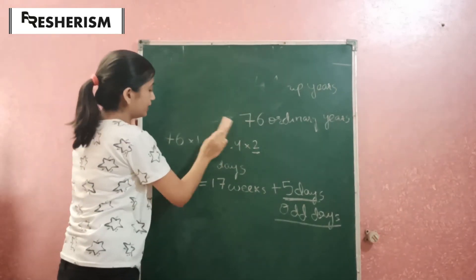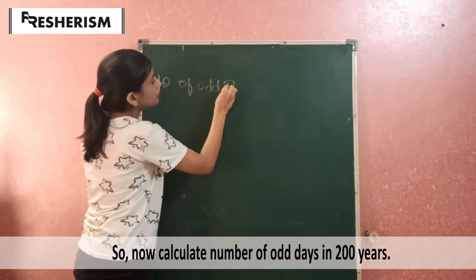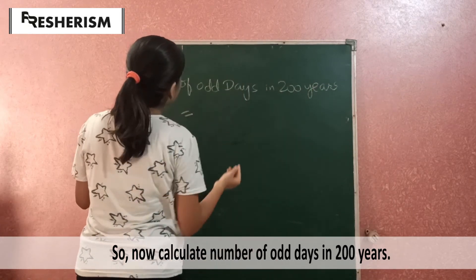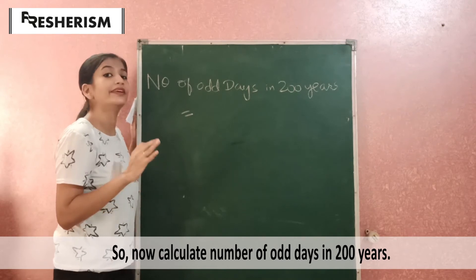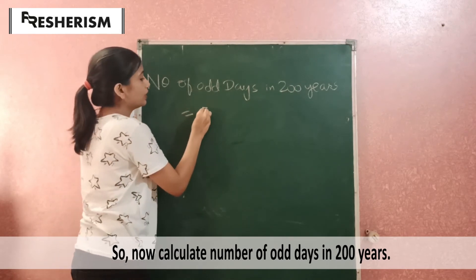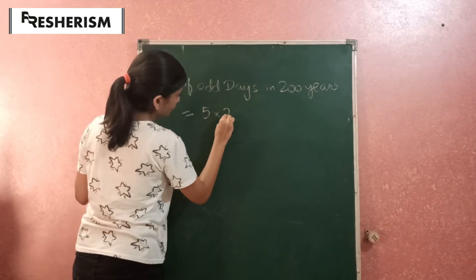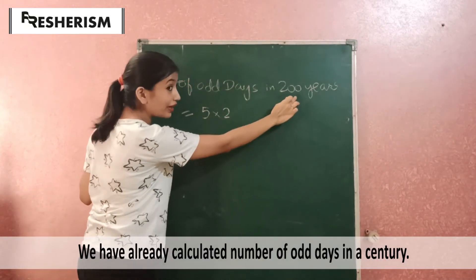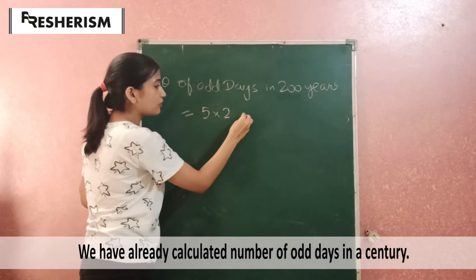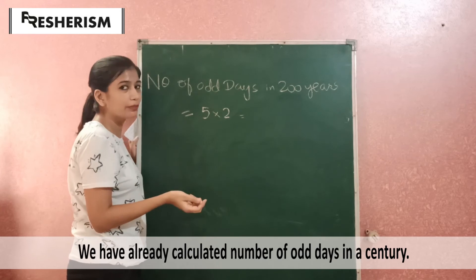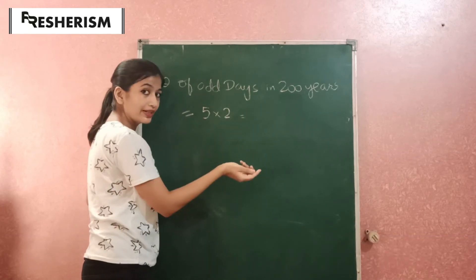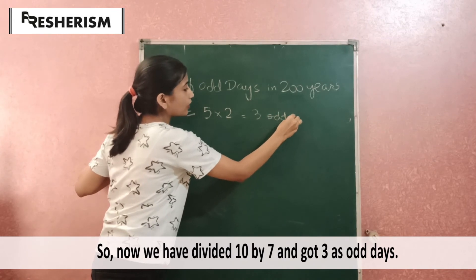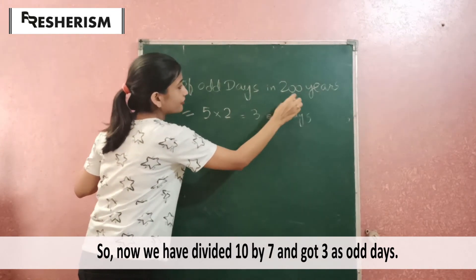Let's calculate the number of odd days in 200 years. Since there are 5 odd days in 100 years, for 200 years: 5 × 2 equals 10. But 10 cannot be the number of odd days, so we divide 10 by 7 — the remainder is 3. Therefore, there are 3 odd days in every 200 years.